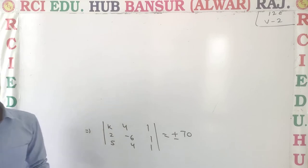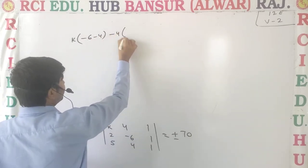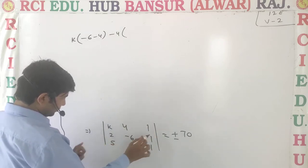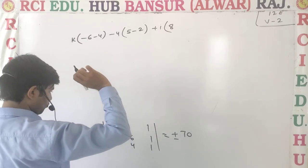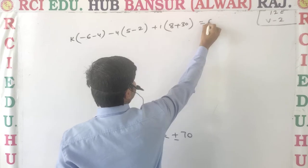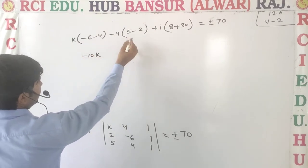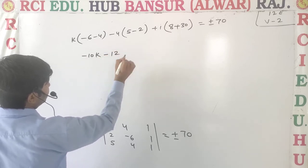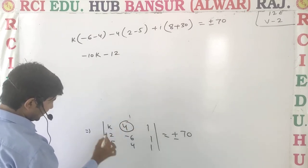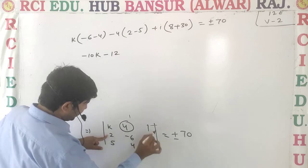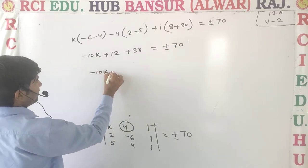Now, expanding the determinant: K times (minus 6 minus 4) minus 4 times (2 minus 5) plus 1 times (8 plus 30). This row is gone and this column is gone. So we get minus 10k plus 12 plus 38, which gives minus 10k plus 50, equal to plus minus 70.